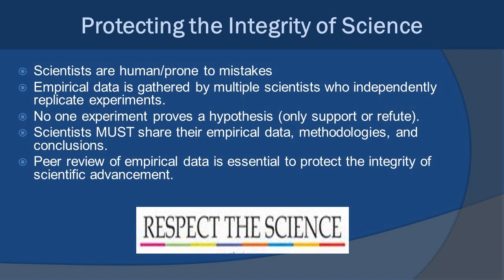So it's up to all of us to protect the integrity of science. And first of all, you got to take into account that scientists are human beings and we're prone to mistakes. So it's really important that we rely on empirical data that's gathered by multiple scientists independently replicating experiments. This helps create a system of checks and balances. No one experiment will ever prove a hypothesis. It can only support or refute it. Scientists must share their data and their methodologies and conclusions so others can read them, peer review them, and sometimes retest them. This helps to assure the integrity of the scientific community and our own scientific advancement over time. Respect the science.